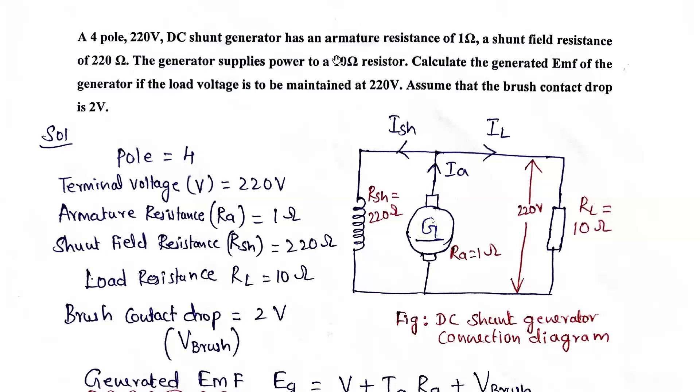Load resistance is also given as 10 ohms. So this armature current from the generator is divided into two - that is, shunt current and load current. And the terminal voltage is given as 220 volts.